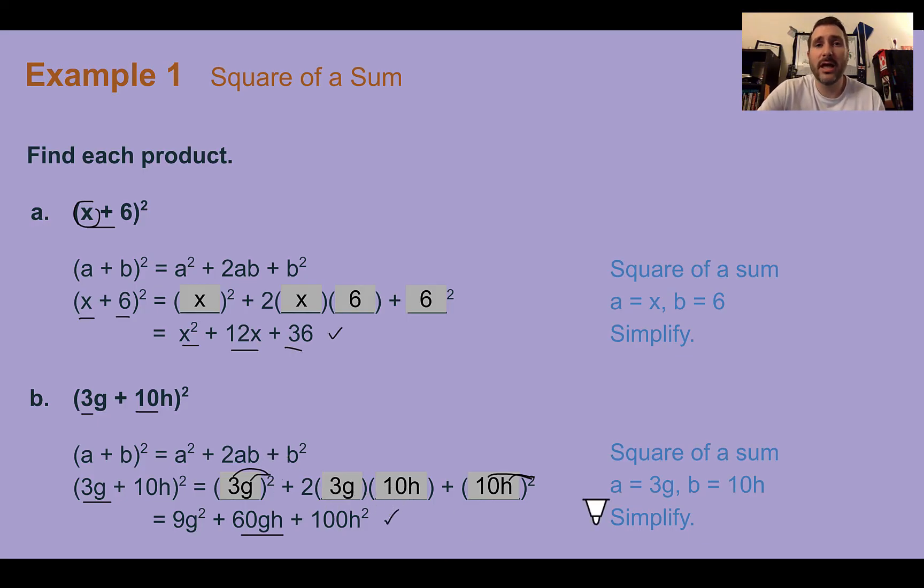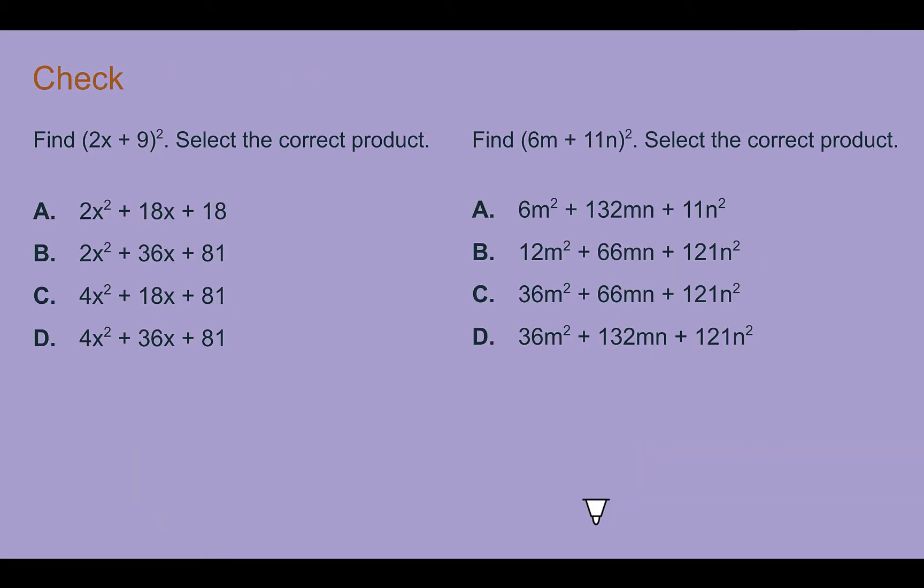And they are following that same pattern. If we wanted to use the FOIL or box methods to multiply it out, we could do that, but this is a shortcut for this special type of problem. Check your understanding. Answer both parts to find the correct products. Pause the video now and complete the check.